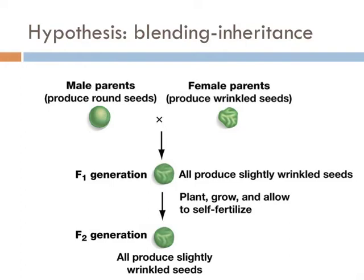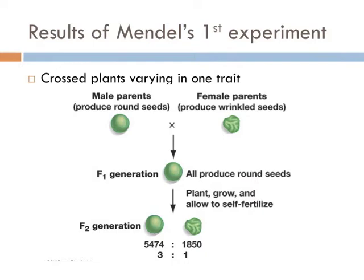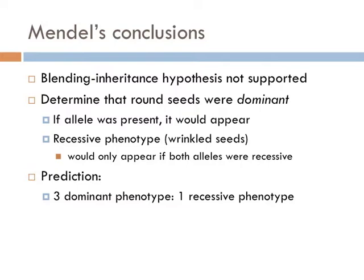So he conducted his experiment, and instead of finding the F1 generation producing all slightly wrinkled seeds, they produced all round seeds. But the real genius of Mendel was that he followed this experiment for a second generation. And when he grew out the F2 generation, he found that both wrinkled and round seeds were produced. He also found that round seeds were produced approximately three times more than the wrinkled seeds. Mendel concluded that the blending inheritance hypothesis was not supported with respect to his results.